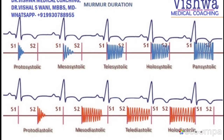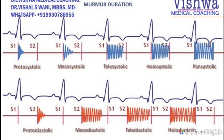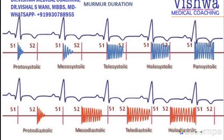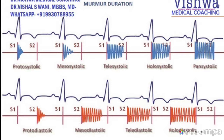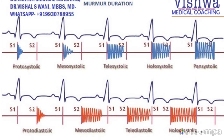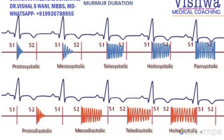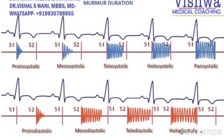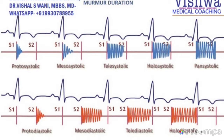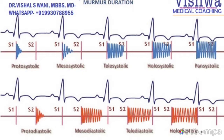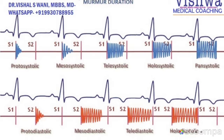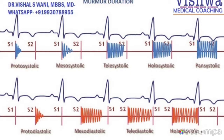So combining these things together: between S1 and S2 we have systole of the heart, and between S2 and the next S1 we have diastole of the heart. So if you hear some abnormal sounds between S1 and S2, those are called systolic murmurs. If heard at the beginning of systole it is called proto-systolic, then meso-systolic, tele-systolic, and holo-systolic or pan-systolic, meaning it spans the complete duration.